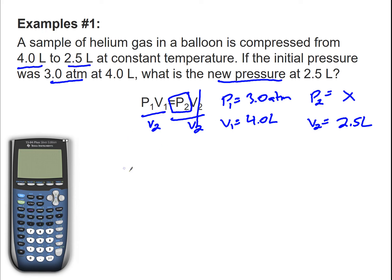Now I'm going to plug in everything, so 3.0 atm times V1 which is 4.0 liters, divided by V2 which is 2.5 liters. And there we go, we're all set up.